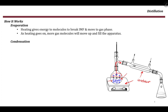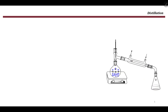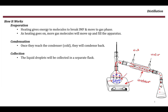The condenser consists of two tubes: the inner tube, where the vapor moves through, and the outer tube, where water goes in and out. Because of the presence of water, the inner tube is kept cold, and once the vapor enters it, it condenses back — the gas molecules transform back into liquid molecules. They then move down and are collected in the collection flask. So the distillation process involves evaporation, condensation, and then collection in the collection flask.